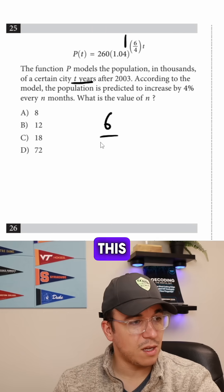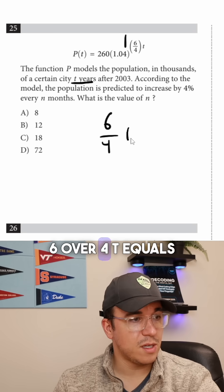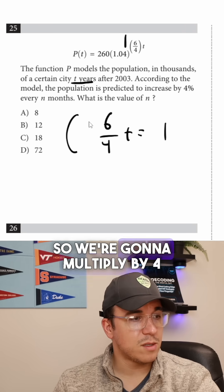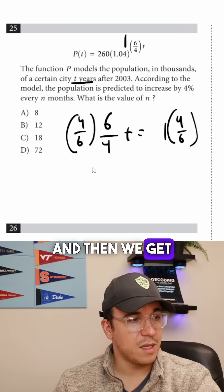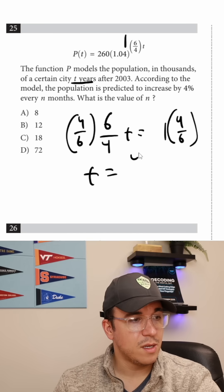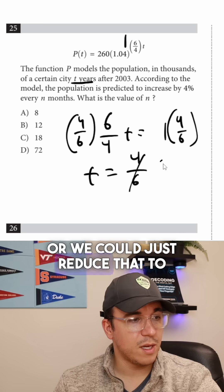So we're going to have to solve this small equation. 6 over 4, T equals 1. So we're going to multiply by 4 over 6, and then we get the time in years is 4/6, or we could just reduce that to 2/3.